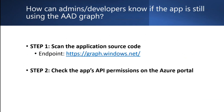So, if you're an admin or application developer, how can you know if your application is still using the Azure AD Graph? Let's quickly review the steps. The first step is to scan the application's source code. If you own the application's source code, search for the URI endpoint graph.windows.net in the code. This is the Azure AD Graph endpoint, and applications that call this endpoint use Azure AD Graph.